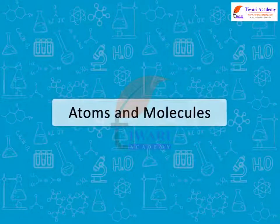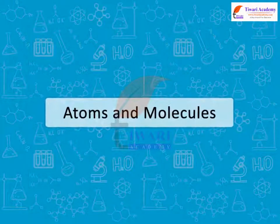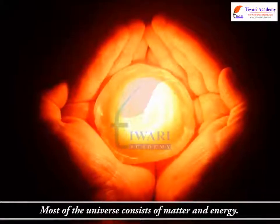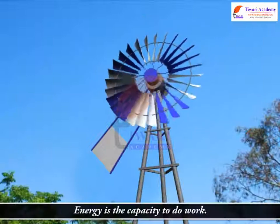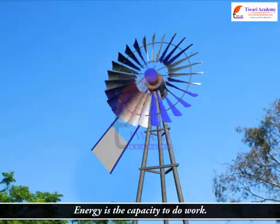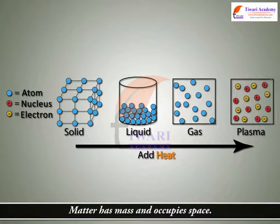Atoms and Molecules. Most of the universe consists of matter and energy. Energy is the capacity to do work. Matter has mass and occupies space.